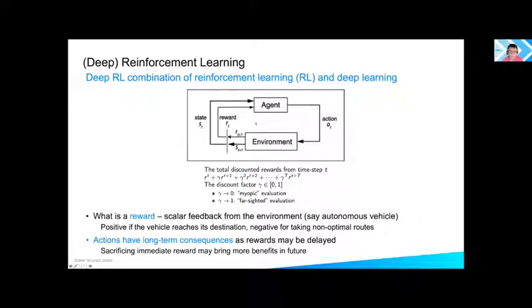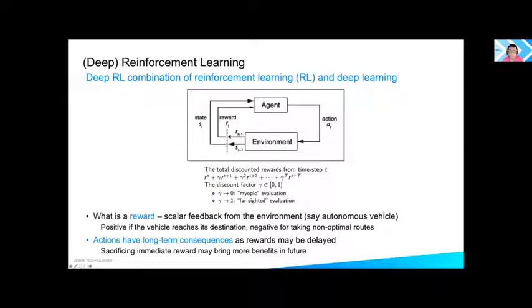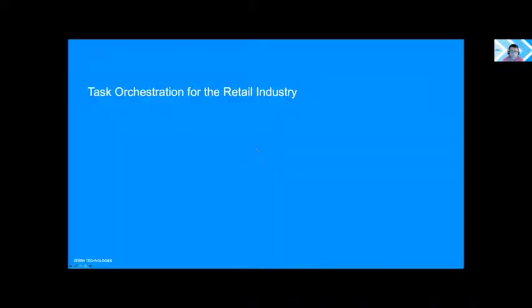Often it's better to sacrifice immediate reward for future benefits — for example, stopping to fill gas slows you down but enables the vehicle to reach its destination. Now let's look at using reinforcement learning for task orchestration in the retail industry.